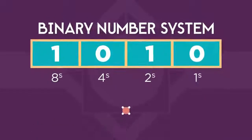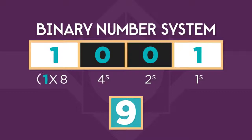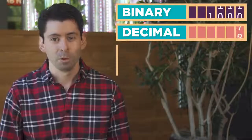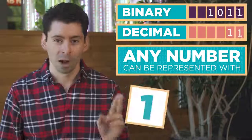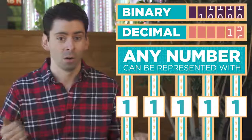For example, the number 9 in binary is 1, 0, 0, 1. To calculate the value, we add 1 times 8, plus 0 times 4, plus 0 times 2, plus 1 times 1. Almost nobody does this math because computers do it for us. What's important is that any number can be represented with only 1's and 0's, or by a bunch of wires that are on or off.